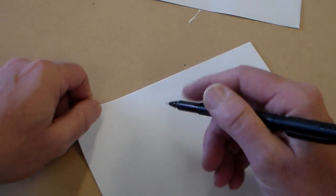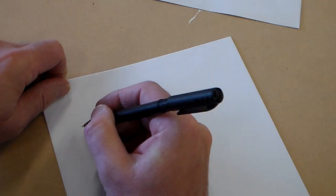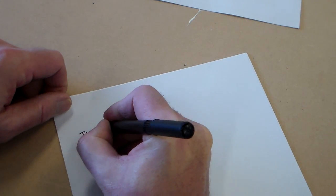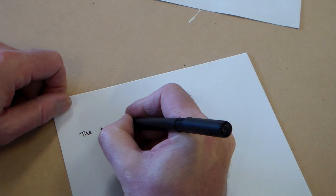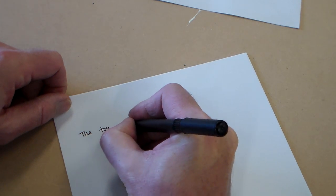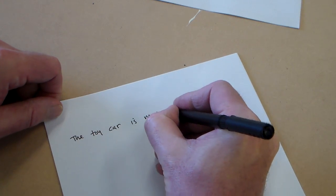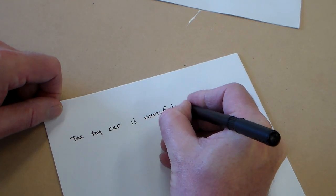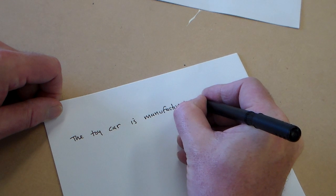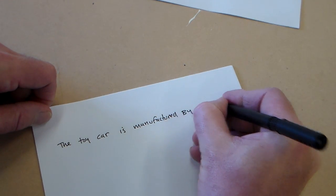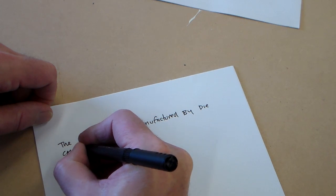So we're going to have a look now at answering this question to get the most possible marks. So, we're going to say the toy car is manufactured by die casting.